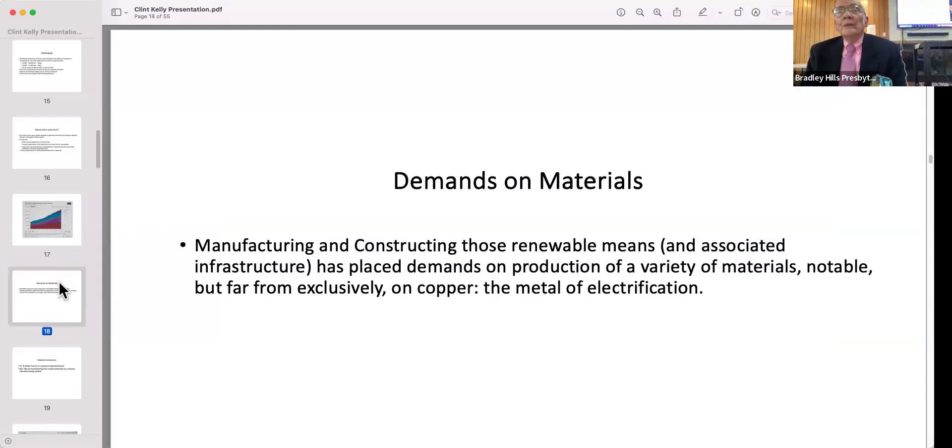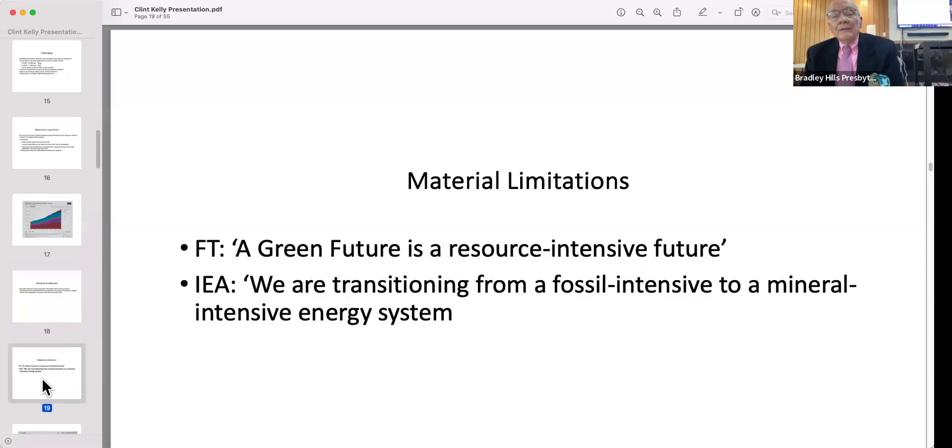If we go with solar and wind, it places unprecedented demands on production of materials needed for solar panels and for wind turbines, particularly but not exclusively copper, which is rightly named the metal of electrification. The Financial Times said two or three years ago 'the green future is a resource intensity future.' The IEA, International Energy Agency, also knows we're transitioning from a fossil intensive to a mineral intensive energy system.